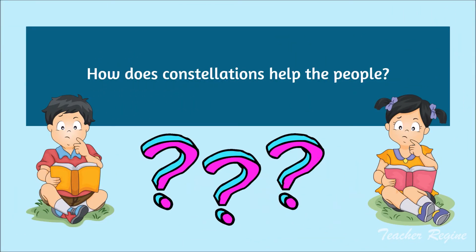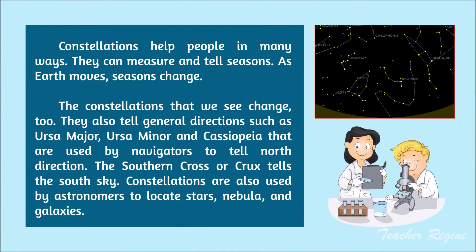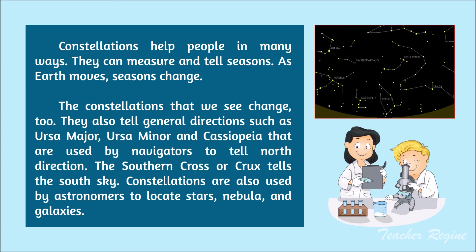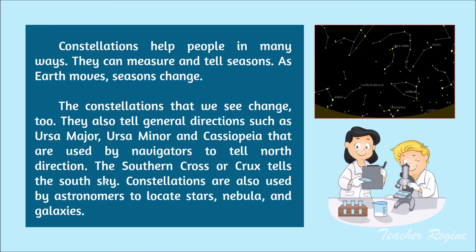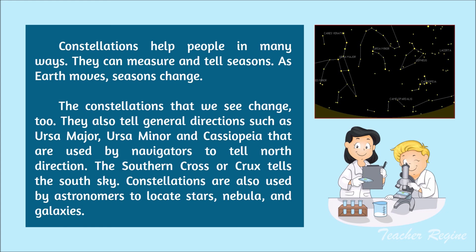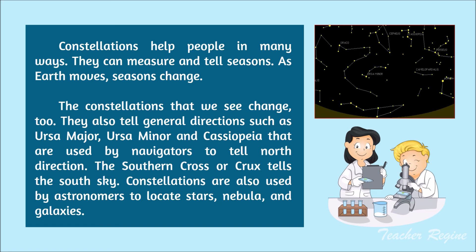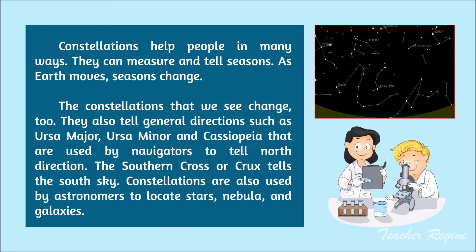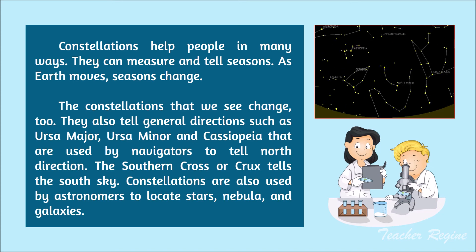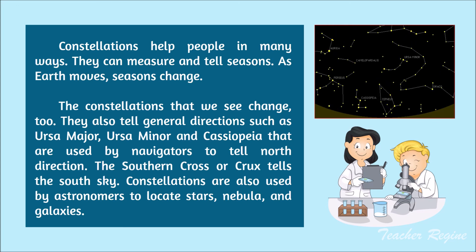How do constellations help the people? Constellations help people in many ways. They can measure and tell seasons — as Earth moves, seasons change, and the constellations we see change too. They also tell general directions: Ursa Major, Ursa Minor, and Cassiopeia are used by navigators to tell north direction, while the Southern Cross, or Crux, tells the south sky. Constellations are also used by astronomers to locate stars, nebulae, and galaxies.